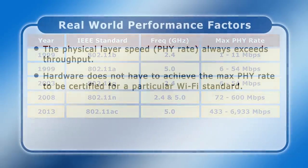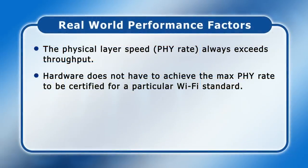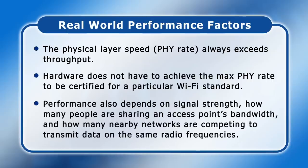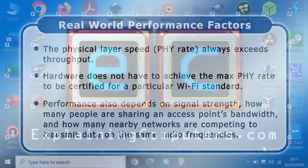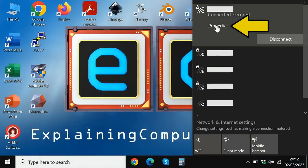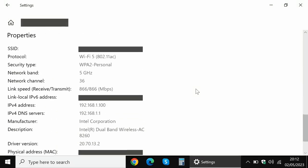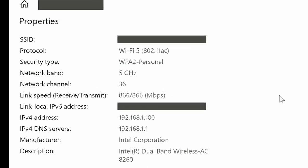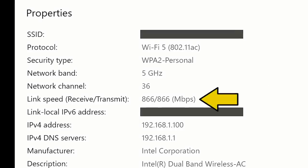Finally, we need to be aware that real-world Wi-Fi performance depends on a whole range of factors. These include signal strength, which reduces the further you are from an access point, how many people are sharing an access point's bandwidth at the same time, and how many nearby wireless networks are competing to transmit data on the same radio frequencies. If you want to know the speed of the connection you are actually achieving in Windows, click on the Wi-Fi icon on the taskbar, then click on Properties for the Wi-Fi network you are connected to and scroll down. For example, my laptop has an 802.11ac connection that's receiving and transmitting data at 866 megabits per second.